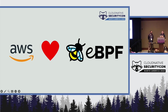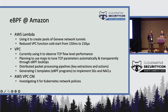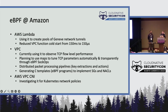At AWS, we love eBPF — we have several groups using it and it's becoming increasingly popular. Lambda is using it today to create pools of Geneva network tunnels, which allowed us to reduce VPC function cold start from 150 milliseconds to 150 microseconds — a pretty significant improvement. VPC is using it in several different places: currently to observe TCP flow-level performance, and later for dynamically tuning the performance of the TCP stack for different services and their access patterns.